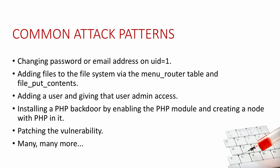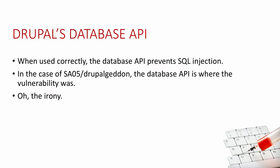The irony is that Drupal's database API, if you use it correctly, prevents almost all SQL injection. If you look at the OWASP top web vulnerabilities, the top one for the web generally is injection. The top one for Drupal is cross-site scripting. Why don't we have so many injection issues? Because our database API is great — if you use dbquery, dbinsert, dbupdate and follow our documentation, you don't have to worry about SQL injection. It's one of the advantages of using a framework.